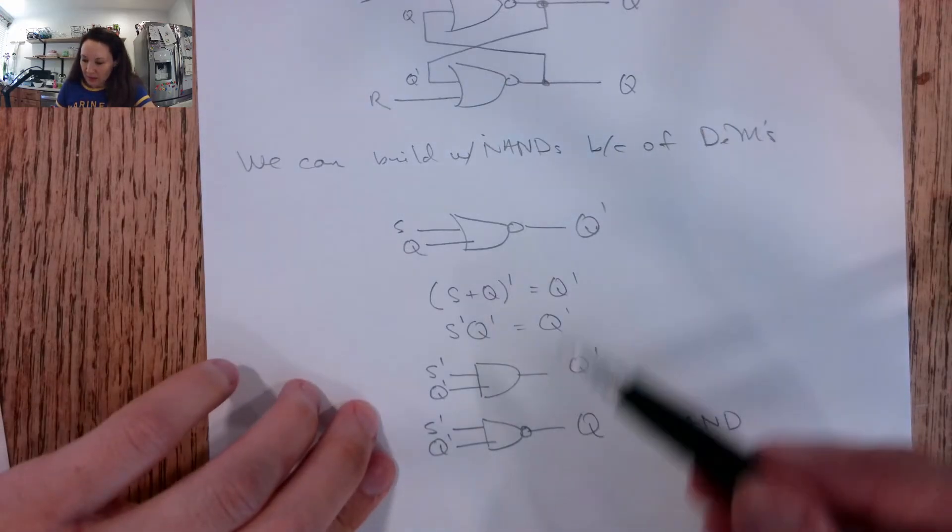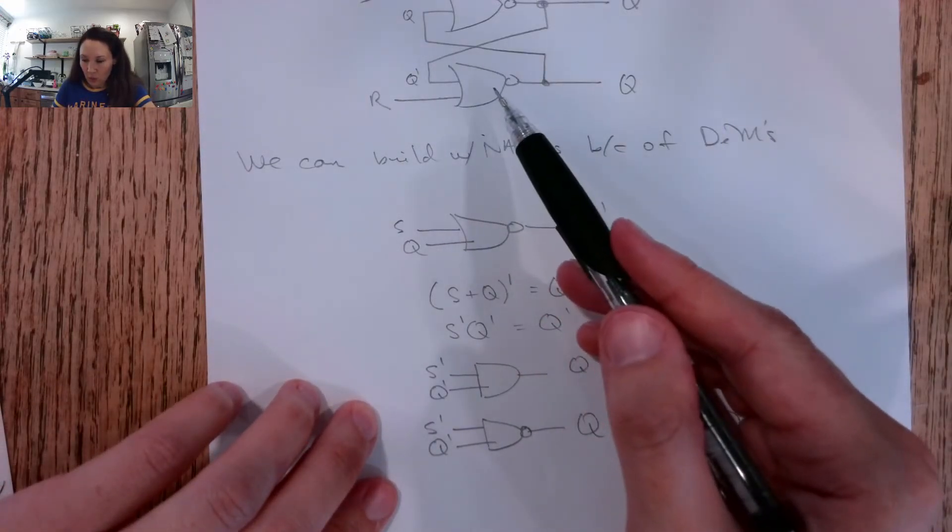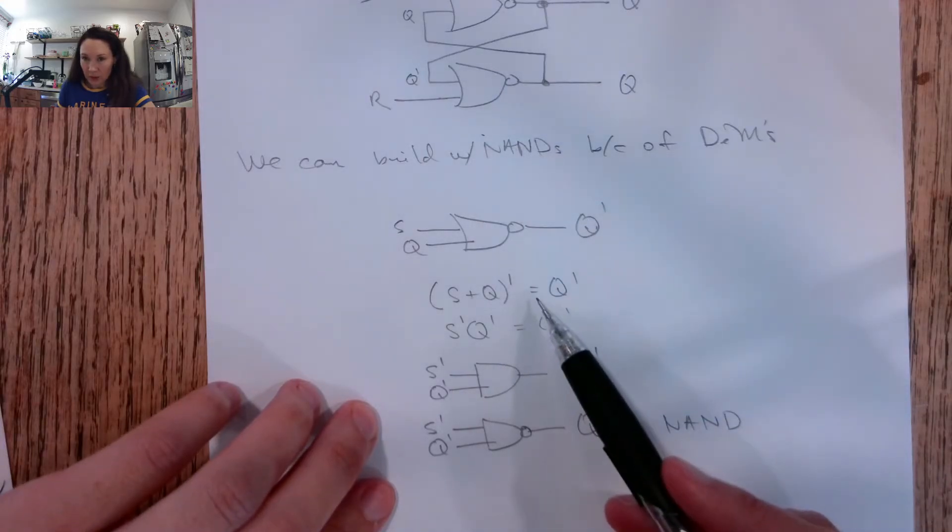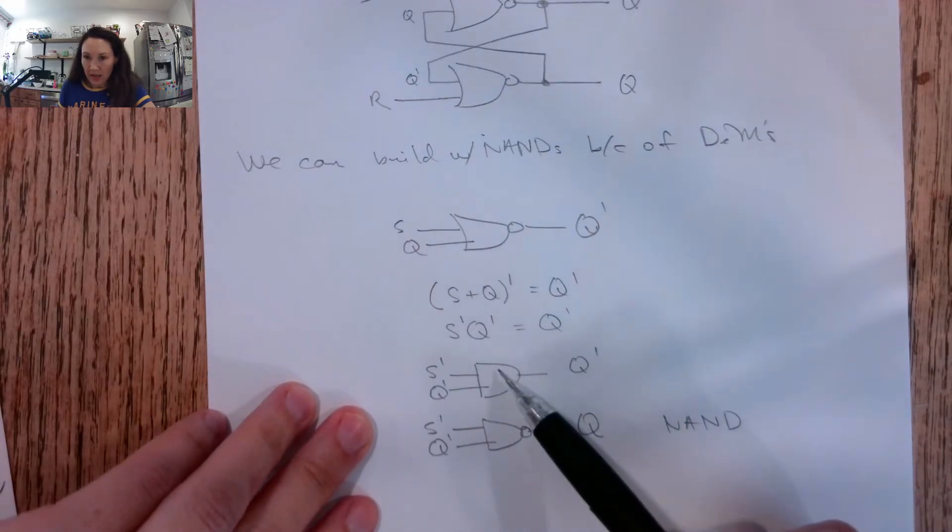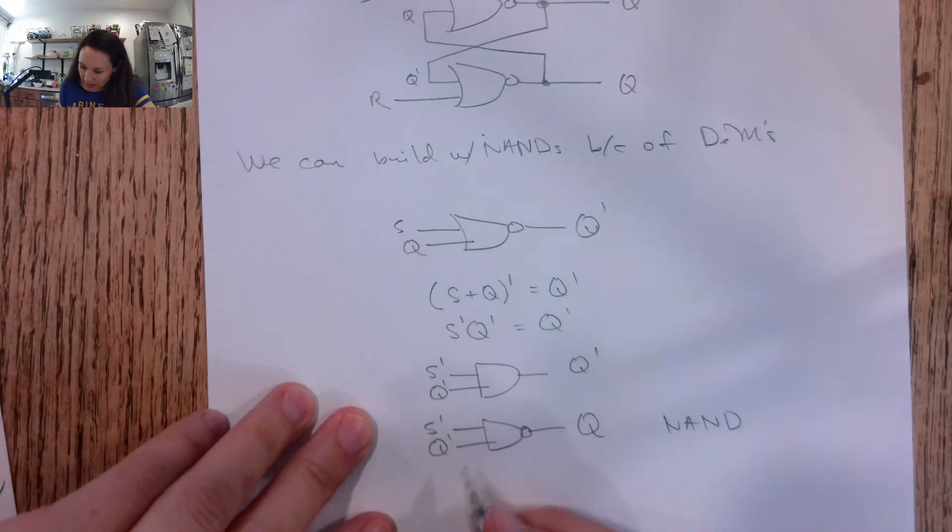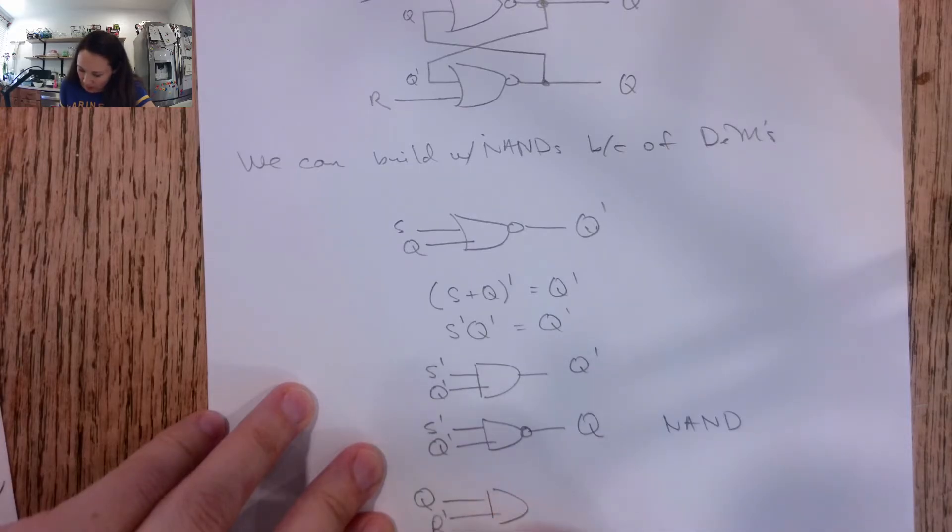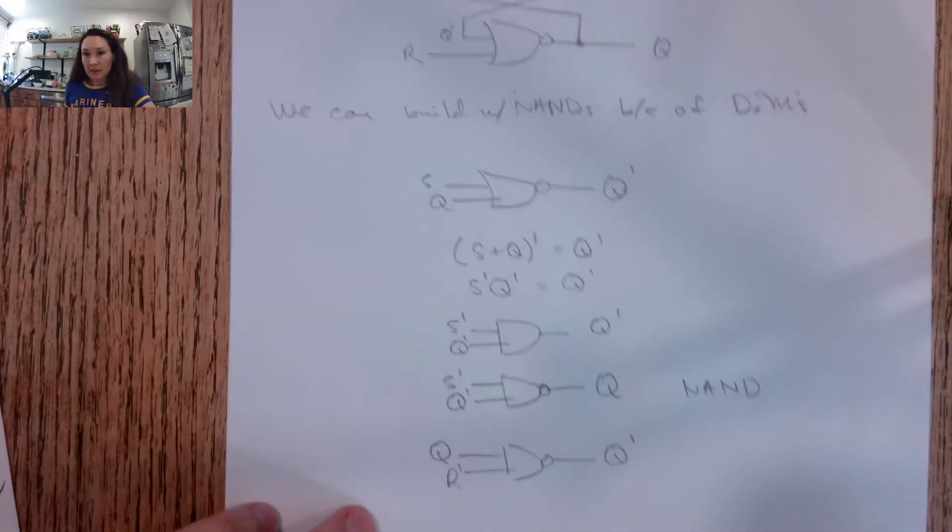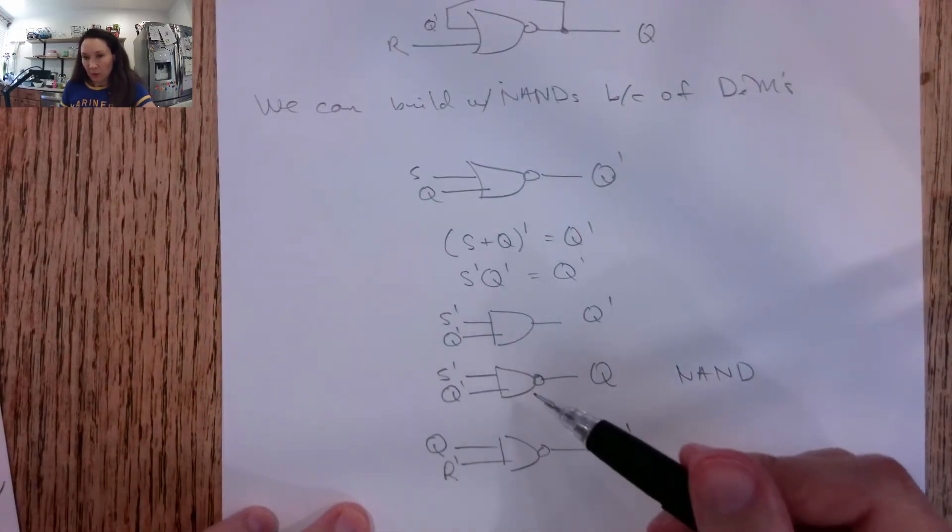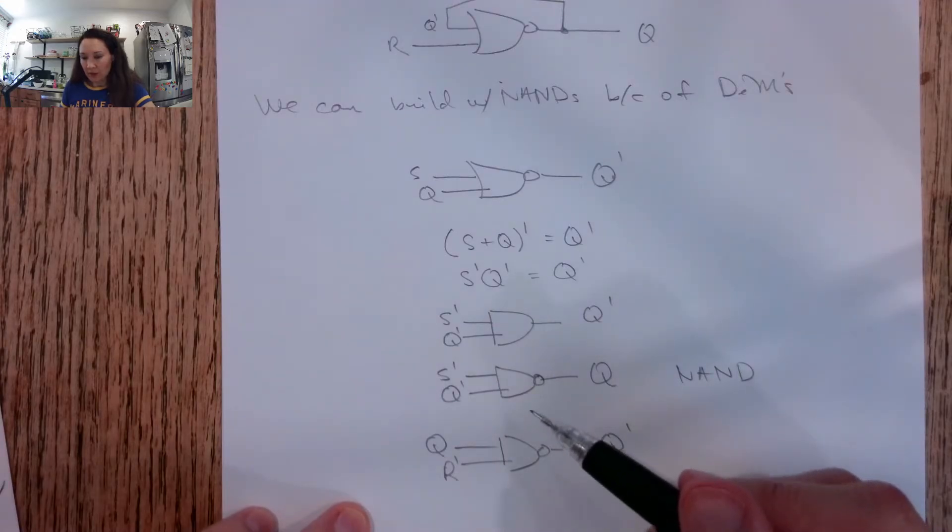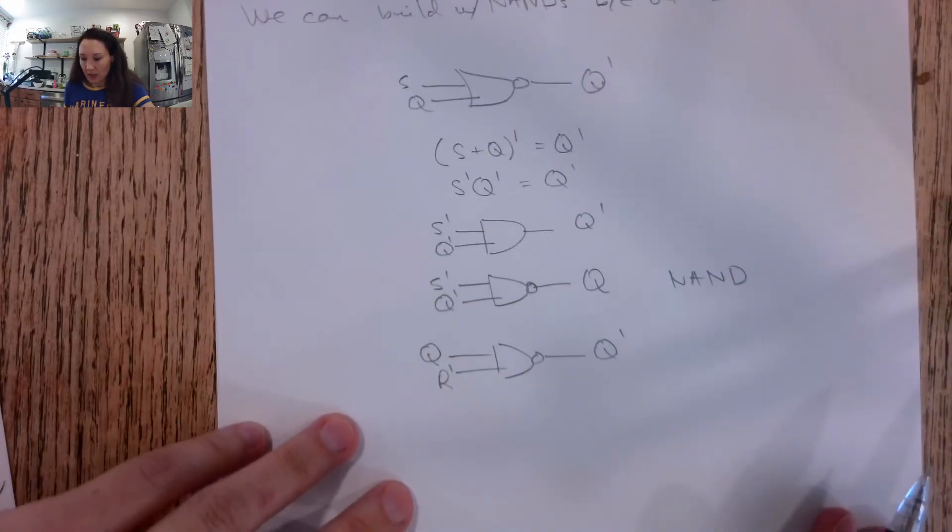So that is the first NOR implemented with a NAND. We can do a similar thing with the second NOR. We can apply De Morgan's to it, algebraically and graphically, with inputs Q and R naught. There's our inverter on the end, and the output becomes Q naught. That's if I remove them individually from the circuit. If I put them back together into the latch,